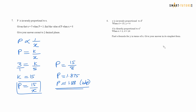Question number 8: y is inversely proportional to d squared. So y equals k over d squared. Given d equals 10 and y equals 4: 4 equals k over 10 squared. Cross multiplying: k equals 4 times 100, which is 400. So y equals 400 over d squared.